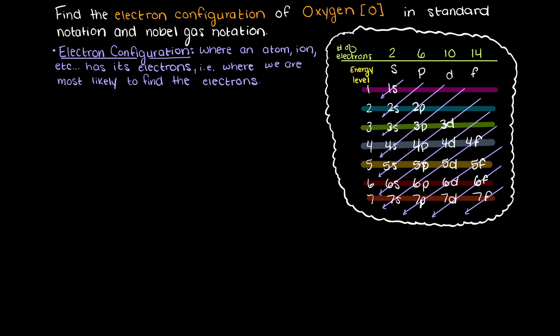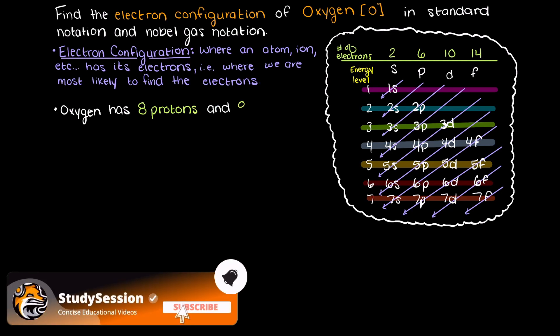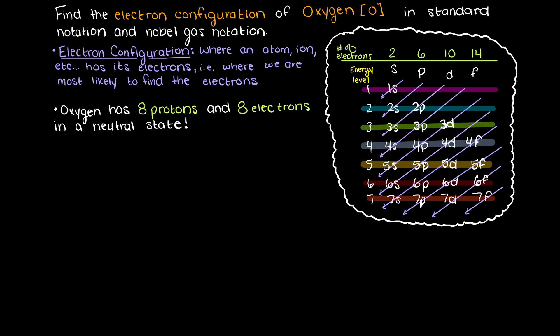To solve this, the first thing we need to do is look at our periodic table and see how many electrons our oxygen atom actually has. Looking this up, we know that oxygen is number 8 on the periodic table, meaning that in a neutral state, no positive or negative charge, our oxygen will have 8 protons in its nucleus, and therefore 8 electrons surrounding that nucleus.